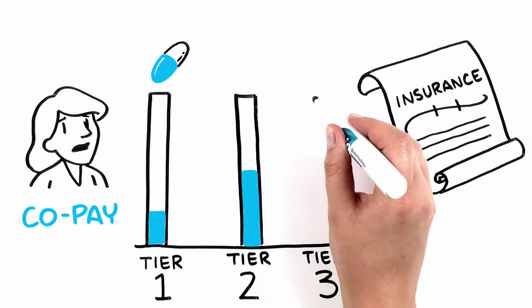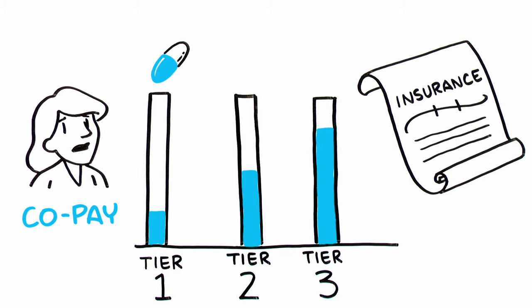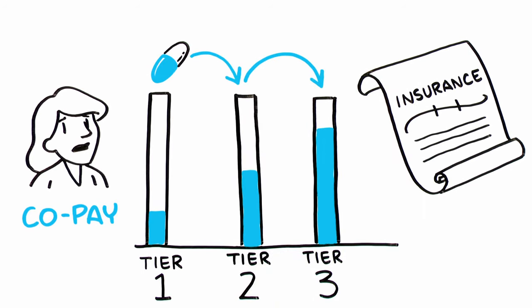While this enables consumer choice in insurance plans, it can also be frustrating. For example, when a plan moves a drug from one tier to another.